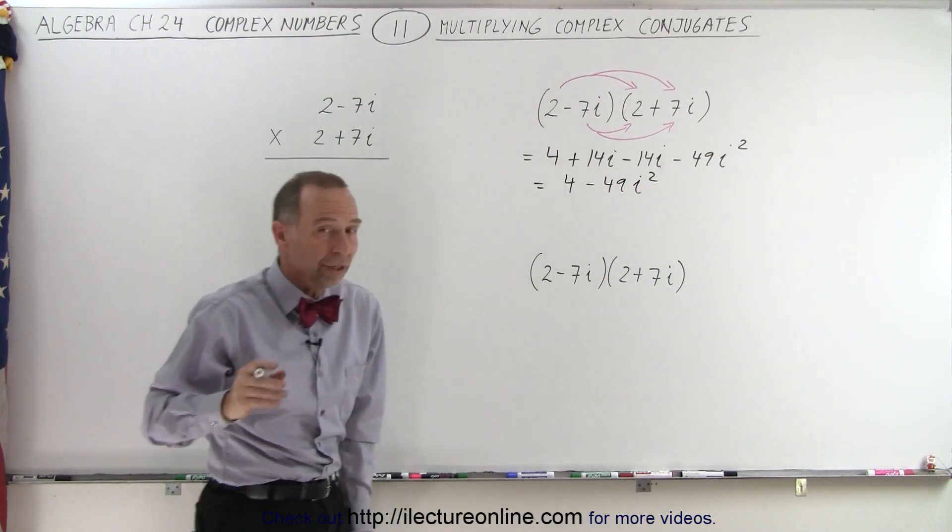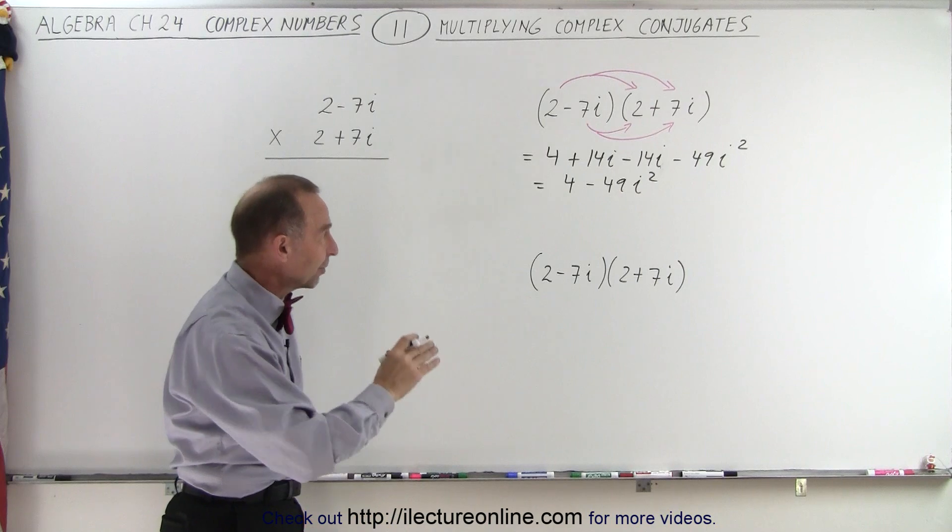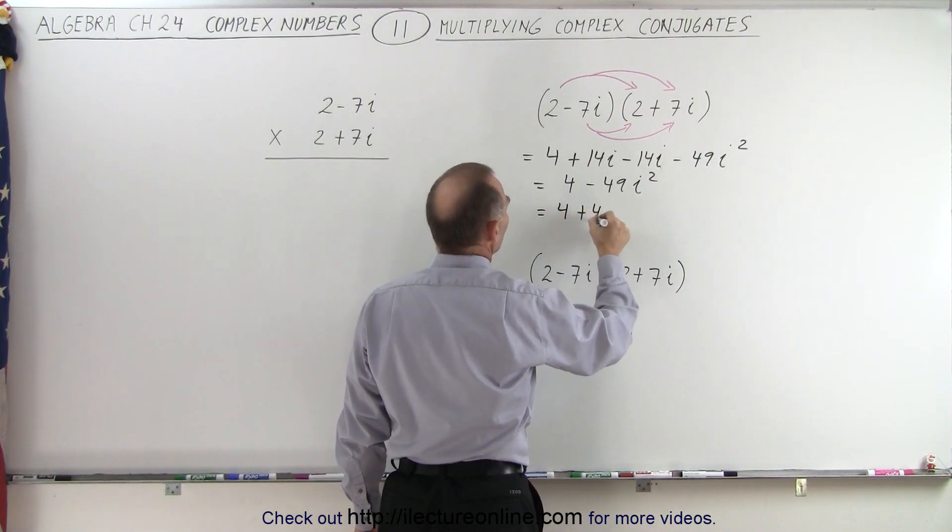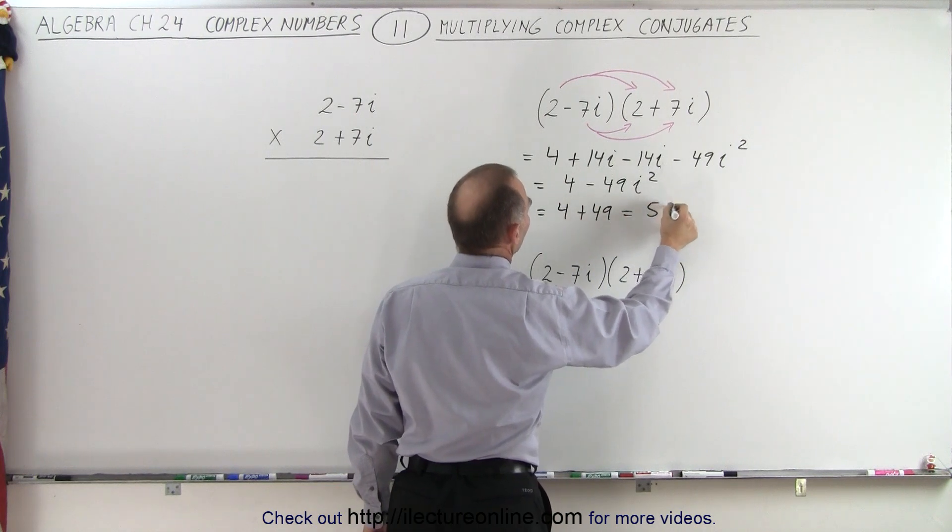But i squared is equal to negative 1. So negative 1 times a negative becomes positive. So this is equal to 4 plus 49, which is equal to 53.